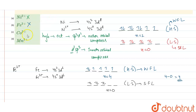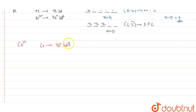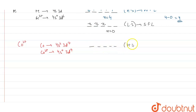Let's move to the next ion, cobalt 2 plus. The electronic configuration of cobalt is 4s2 3d7, and for cobalt 2 plus it is 4s0 3d7. Filling the electrons for the high spin complex, we have 7 electrons: 1, 2, 3, 4, 5, 6, and 7.